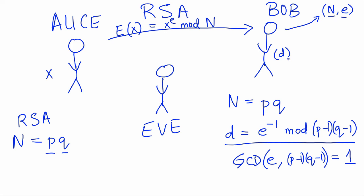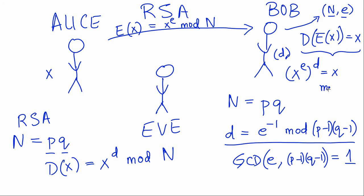But Bob, because he knows D, he uses his decryption function, X to the D mod N, to calculate the message that Alice sent him. Because as it turns out, D of E of X is just the message X. There's a rigorous proof for this provided in the lecture notes. It just shows that X to the E whole to the D is just X mod N.